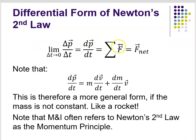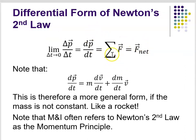Now, of course, that F is the net force, which is the sum of all the forces acting on the particle. So you could write it as F net equals dp/dt, which is the differential form of Newton's second law.